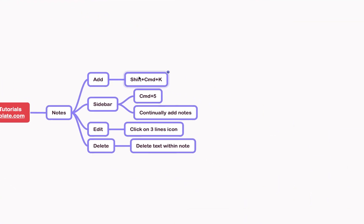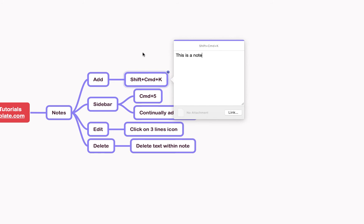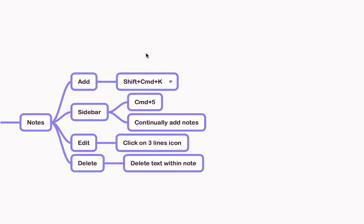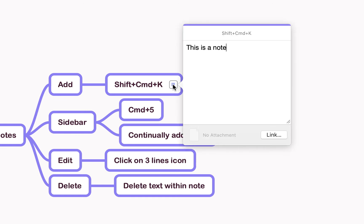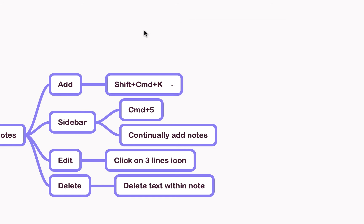So if I do that, Shift+Command+K, you'll see you get this little pop-out window and here I can type 'this is a note'. To make that note stick all you do is click off it and you'll see these three lines appear showing you that a note has been added. If you hover over it it'll pop out with the text, and then to edit that note you simply click on those three lines and you could add additional text if you want to.